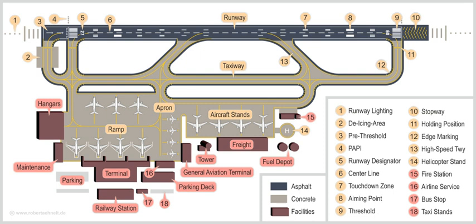A growing number of airports are installing solar photovoltaic arrays to offset their electricity use. The National Renewable Energy Lab has shown this can be done safely. The world's first airport to be fully powered by solar energy is located at Kochi, India. Another airport known for considering environmental parameters is the Seymour Airport at Galapagos Islands.